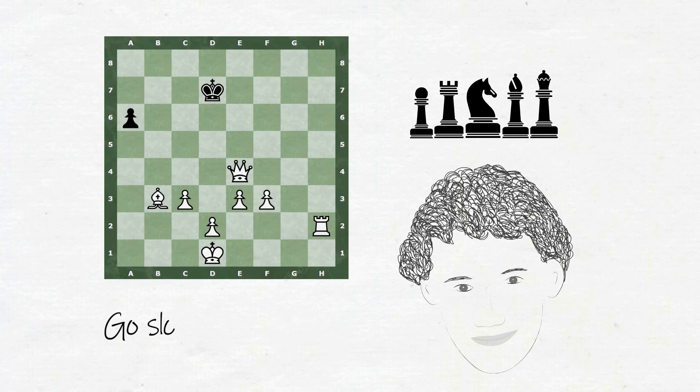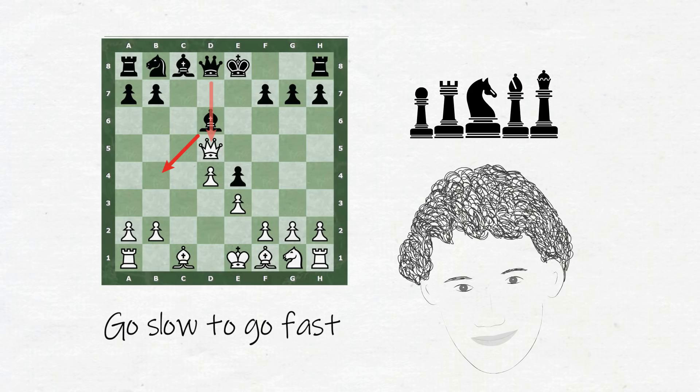By initially going slow and getting a feel for the fundamentals, he could pick up more advanced concepts quicker, which helped him shoot past most beginner players.